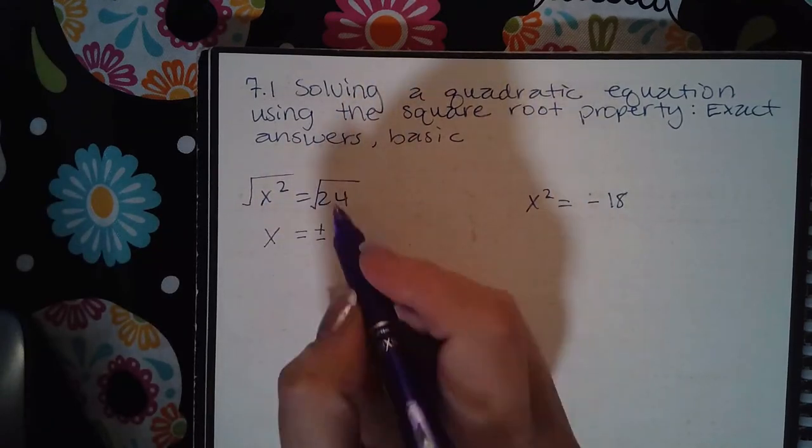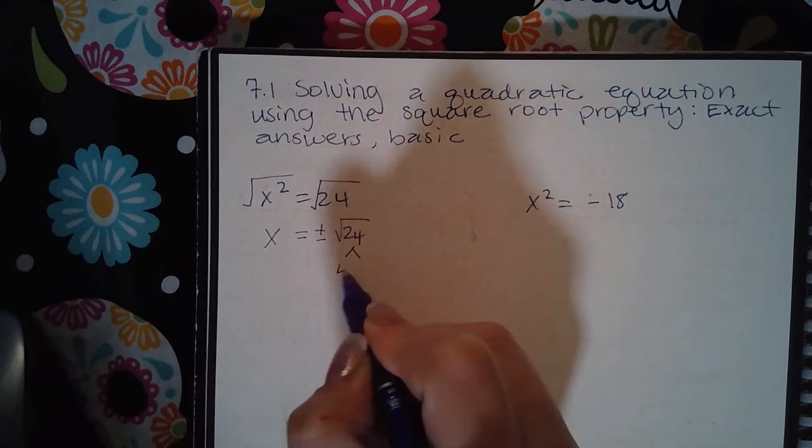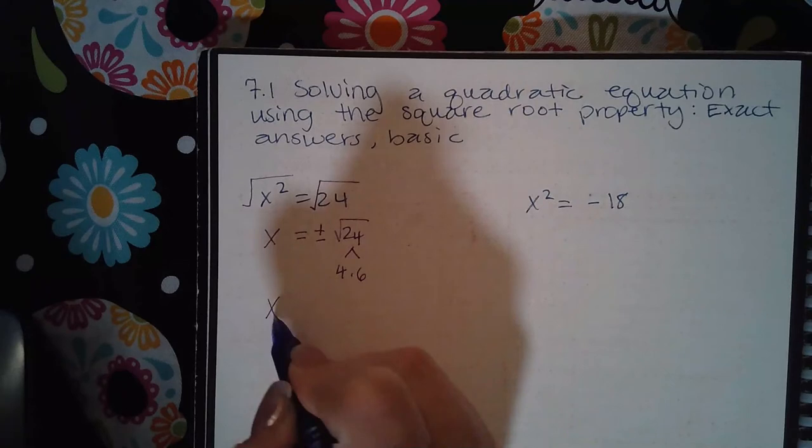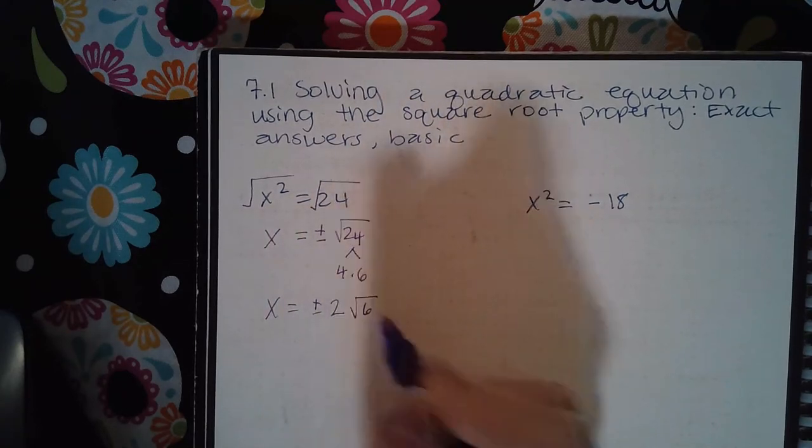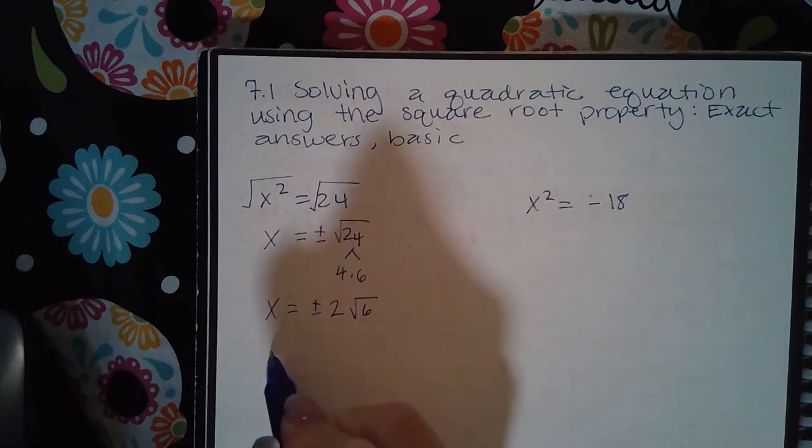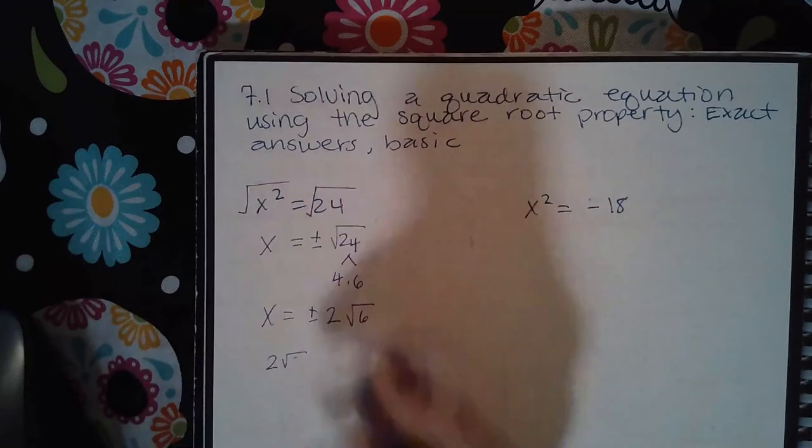We get the square root of 24. Now 24 can be written as 4 times 6, and the square root of 4 is 2. The square root of 6 cannot be simplified, so we get two answers: 2 square root of 6 and negative 2 square root of 6.